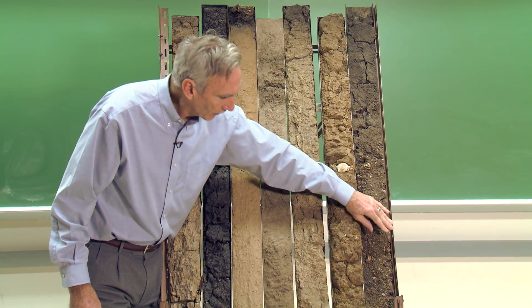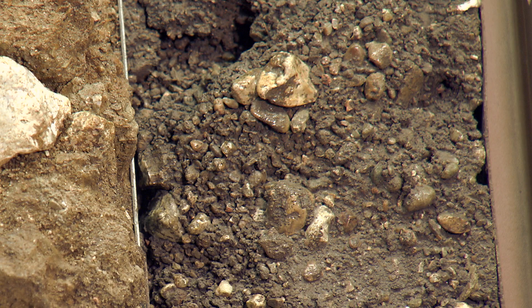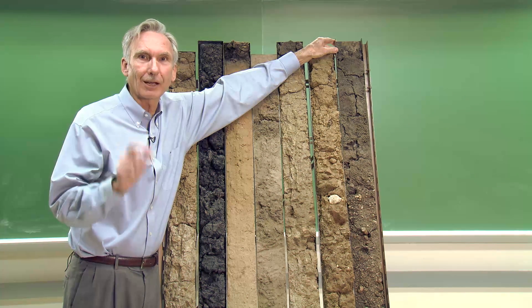This soil here has glacial outwash as its parent material. In glacial outwash, the rocks are rounded and smooth. During the period when the glacier started to melt, a huge volume of water flowed down the river, picking up rocks and rolling them around until their surfaces were smoothed off. You get these very smooth rocks in glacial outwash, and it's also stratified with excellent drainage.